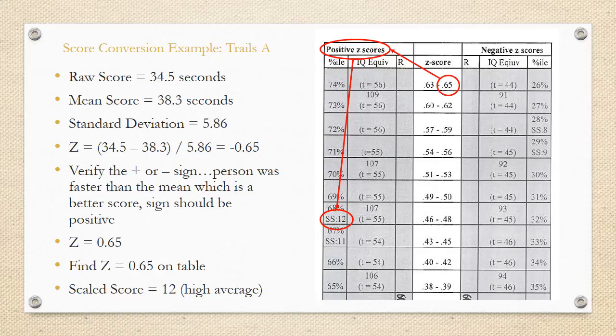Okay, so from the top, let's do an example all the way through. We're going to convert the score from a raw score to a z-score, figure out what it means, and calculate it into a scaled score. So we've got trails A, and this is completely fabricated, but let's say the raw score is 34.5 seconds, the mean score is 38.3 seconds, and the standard deviation is 5.86. Let's do the math. We take the raw minus the mean divided by the standard deviation, and we find that our z-score is negative .65. We have to verify the plus or the negative sign. The person was actually faster than the mean, which is a better score, so the sign should be positive. Let's make our z-score now .65.